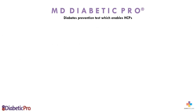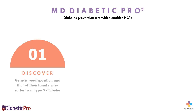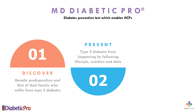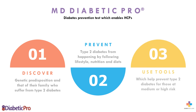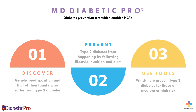MD Diabetic Pro is a diabetes prediction genetic test which enables healthcare providers to discover a patient's genetic predisposition and that of other family members who suffer from type 2 diabetes with a simple cheek swab test, prevent type 2 diabetes by following specific lifestyle recommendations, nutrient suggestions, and recommended diets based on DNA results, and use tools which help prevent type 2 diabetes for those at medium to high risk.